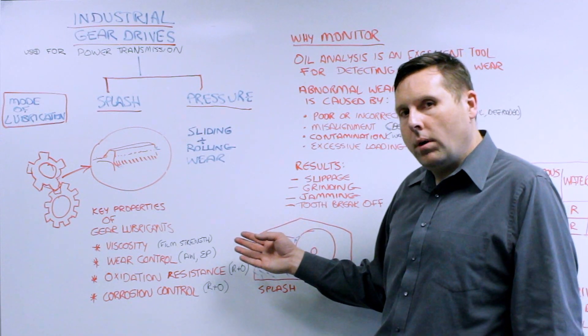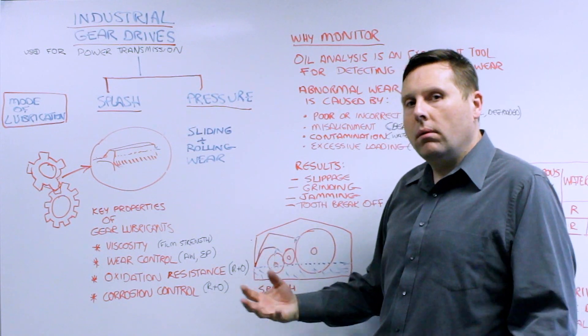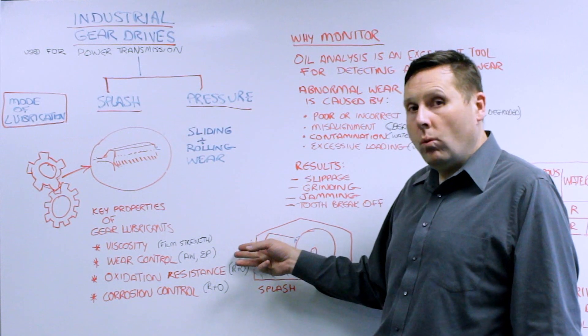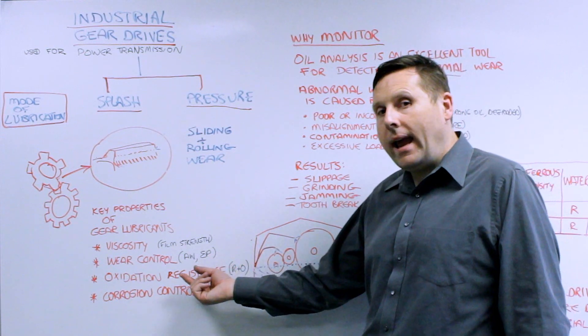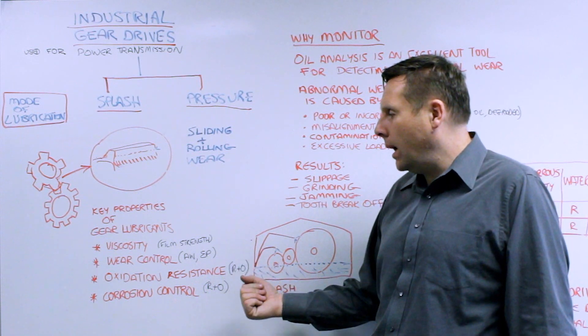That's the most important physical property of gear system lubricants. But also gear lubricants are chosen and additized for wear control. Usually there can be an anti-wear or AW or an EP extreme pressure additive applied.